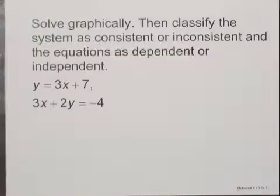Solve graphically, then classify the system as consistent or inconsistent and the equations as dependent or independent. The system of equations is y equals 3x plus 7 and 3x plus 2y equals negative 4.